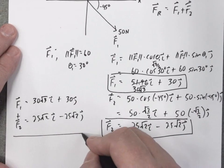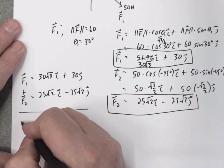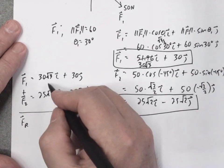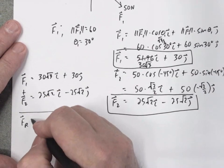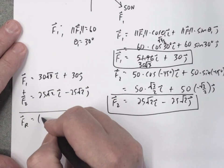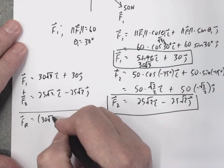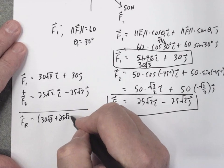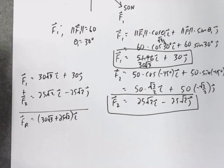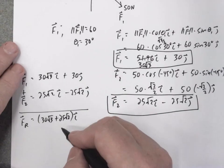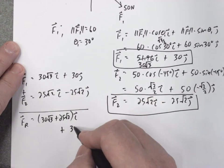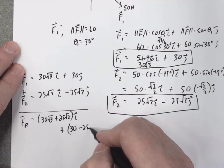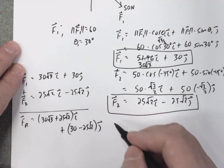So it's like we're adding those together. You add the I parts and J parts. So the resultant vector, or the answer, you can't really combine these. 30 square root of 3 plus 25 square root of 2, that's the I part, plus 30 minus 25 square root of 2, and that's the J part.